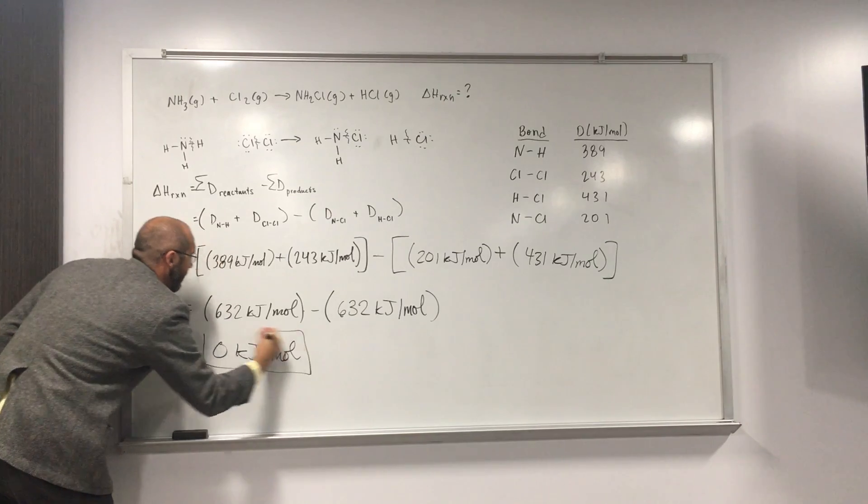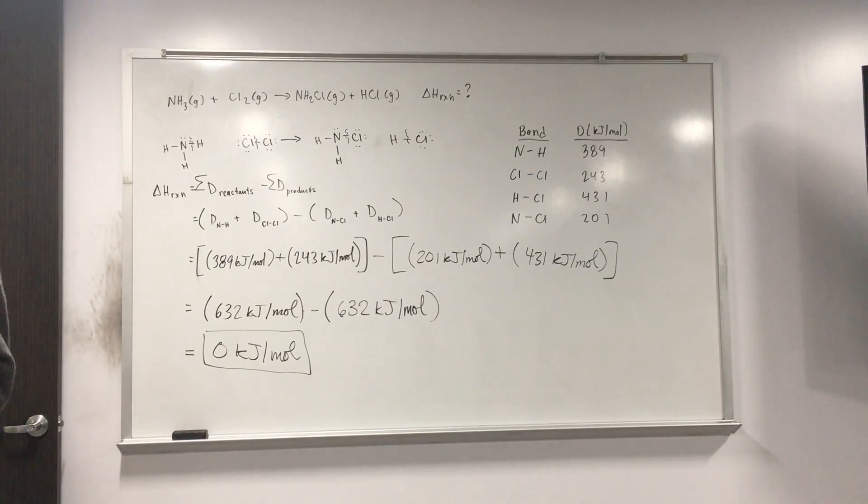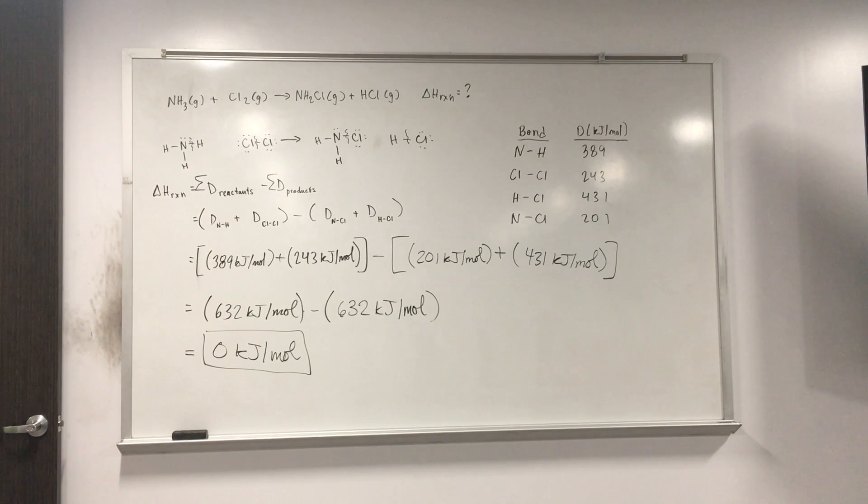Oftentimes, delta H is going to give you some number of negative or positive, right? And if it's going to be a negative number, it's an exothermic reaction. Right? Exothermics are usually favorable. So, yeah. In this particular instance, it just so happened that the bonds added up to the same thing. So are there any questions about this one? Any questions? Okay, cool. Well, let's move on.